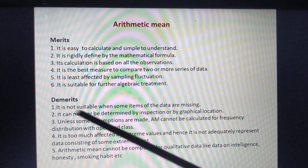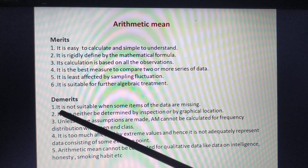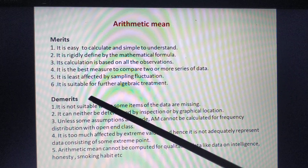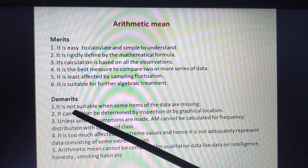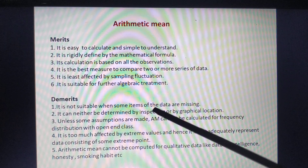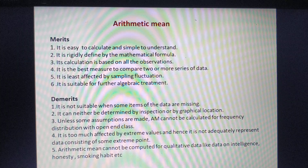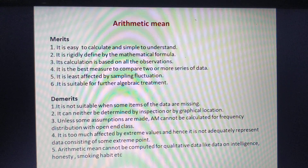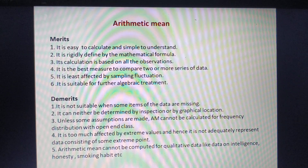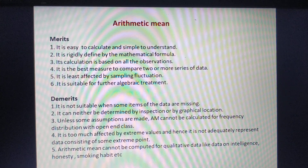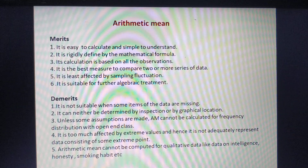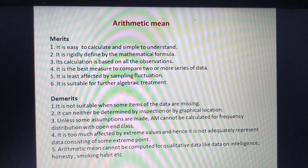Now let's look at the demerits. The first demerit is that it is not suitable when some items of the data are missing. Because we need to add up all items and divide by the number of observations, if some observations are missing, we cannot calculate the arithmetic mean.